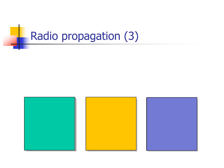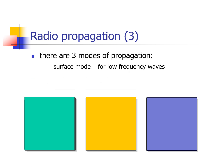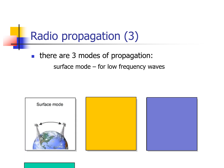There are three ways on how radio waves propagate. First is surface mode for low-frequency waves. This is the transmission of radio waves from one continent or country to another, or one place to another.